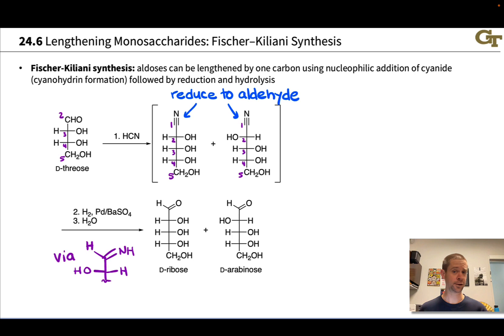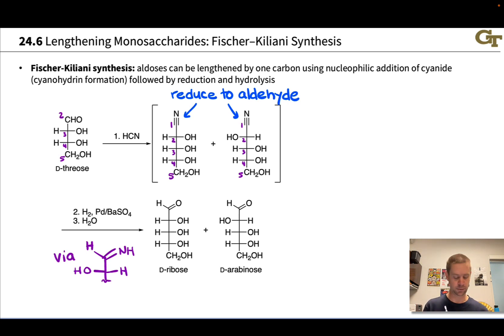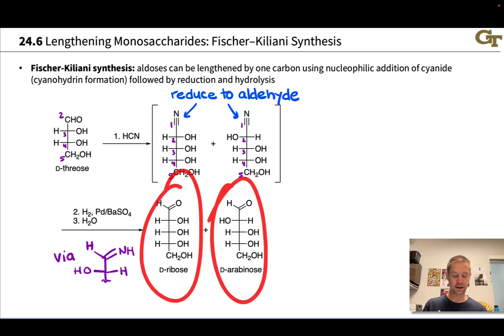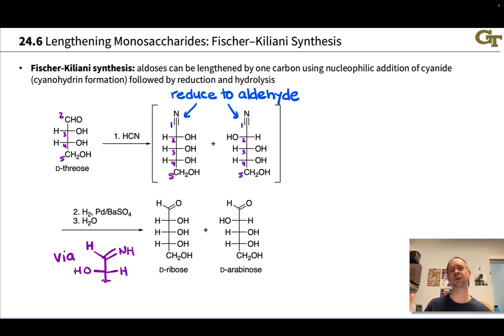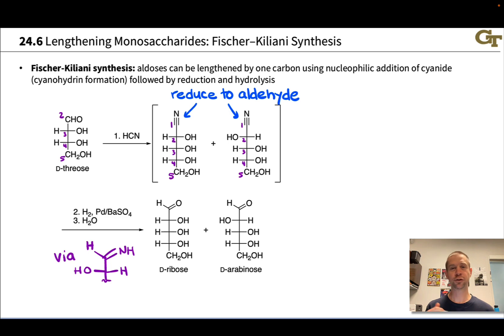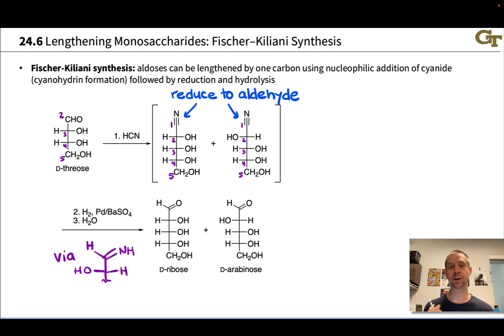This is the Fisher-Kiliani synthesis, and of course we can iterate it — we can do this all over again with another round of HCN, H₂, palladium and barium sulfate, and then H₂O. This would convert these pentoses into hexoses, and so on. What if we had a pentose in hand, say D-ribose, and we wanted to degrade it back down to a tetrose or even D-glyceraldehyde? Then we'd need to make use of some kind of degradation synthetic approach.